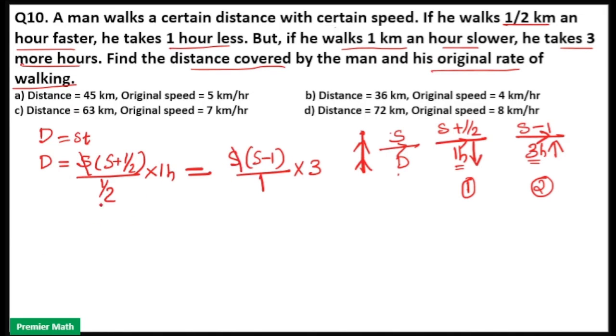Then 1/2 will be 2 here. So 2 into s plus 2 into 1/2 is 1, that is equal to 3s minus 3. So 3s minus 2s is equal to s, and 1 plus 3 is equal to 4. So s is equal to 4 kilometer per hour. His speed is 4 kilometer per hour.